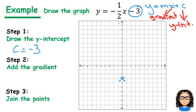Now we want to look at our gradient. So our gradient is the number in front of x. In this case, our gradient is negative 1 half. Now a reminder for you, gradient is rise over run.